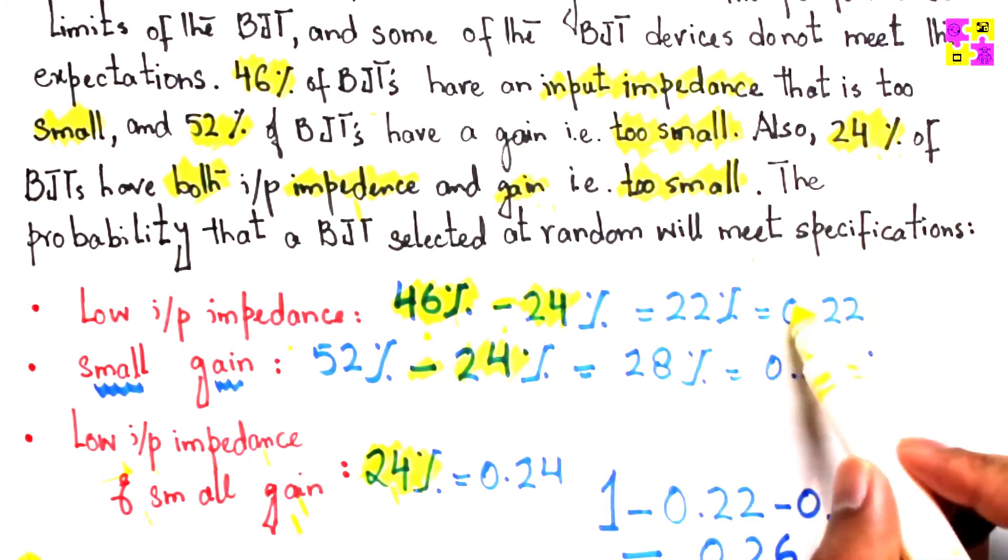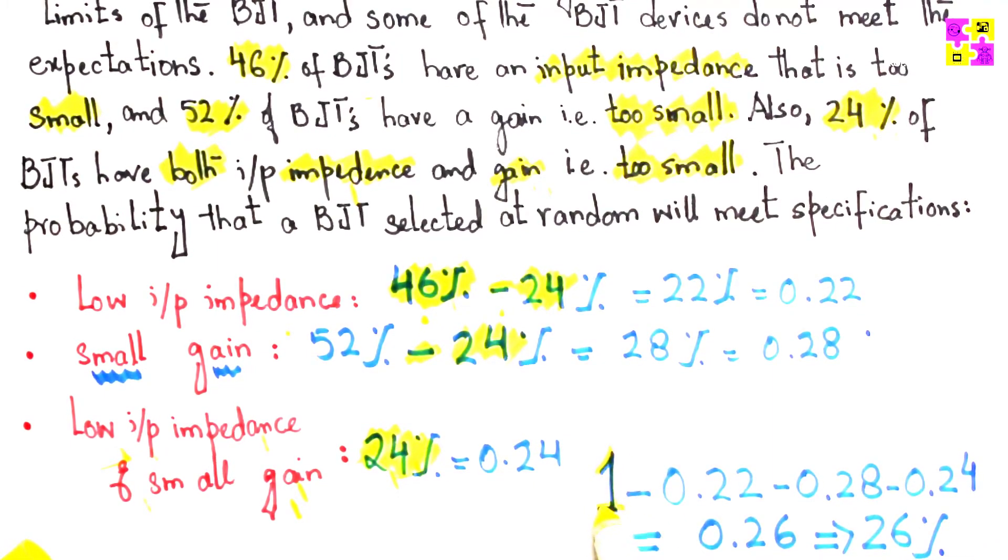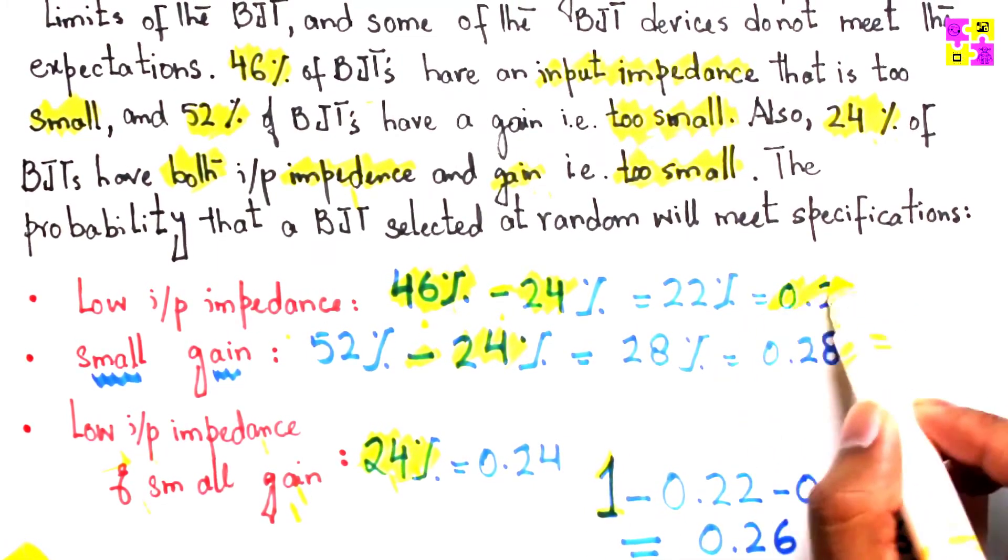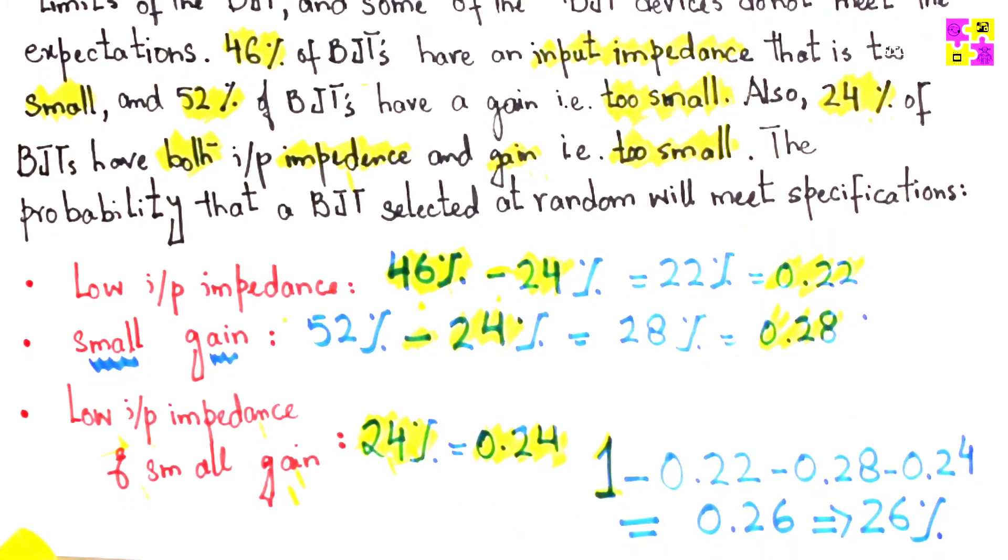Therefore, the total overall probability is going to be one, that's the highest we can have, minus this number, minus this number, and minus this number. I hope you get this.